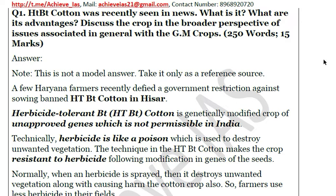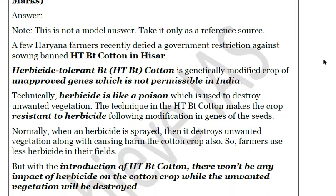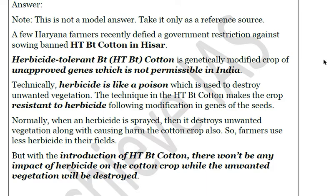Herbicide is sprayed to prevent the growth of weeds. However, the problem is that when herbicide is sprayed it also affects crop production — the yield of the farmer decreases, directly impacting their income. What HTBT cotton does is make the cotton seeds resistant to the herbicides being sprayed to eliminate weeds, so the crop doesn't get affected by the herbicide.